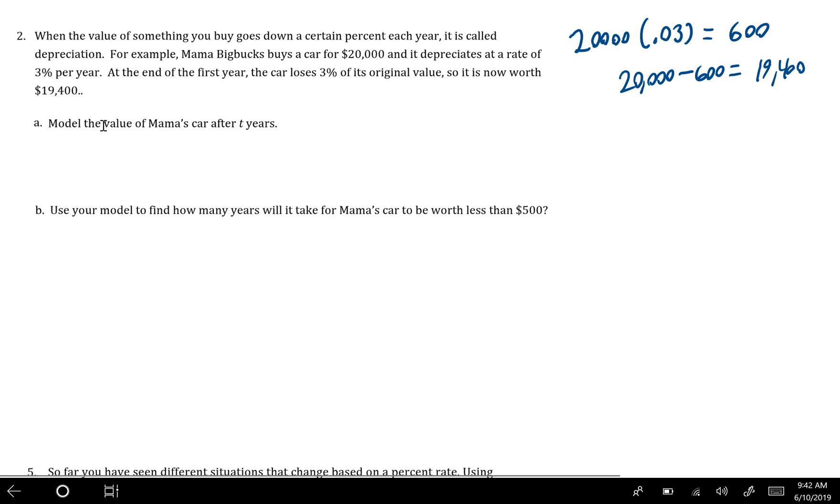And so as we talked about, if it loses three percent of its value, that means it keeps ninety seven percent of its value. So an easier way to do this instead of multiplying and then subtracting is to just multiply by 0.97.